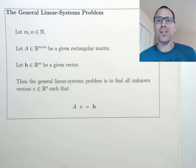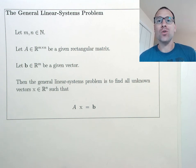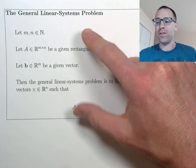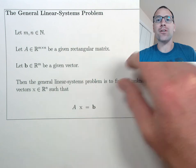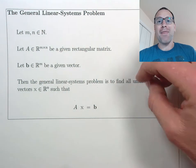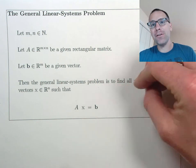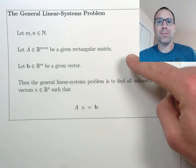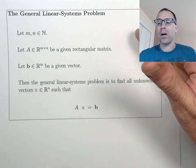Welcome to introduction to lesson 17. We are now transitioning away from non-singular linear systems into general linear systems. The first part of this video is going to be focused on defining the general linear systems problem, and then we're going to take a look at the similarities and differences between general linear systems and non-singular linear systems. Let's start with the problem statement.